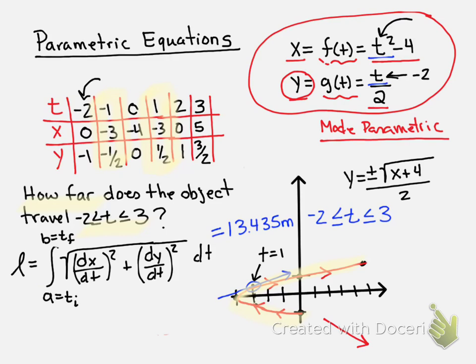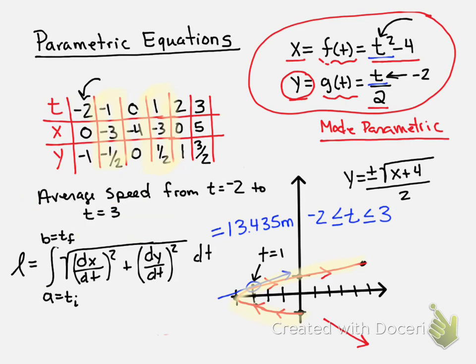A couple other things you might be asked are the average speed from t = -1 to t = 3. Well, if we already had a distance traveled, we could just divide this by the time, 3 minus a -2. We're really just dividing that distance by 5 seconds or 5 units of time. And as a formula, we're just going to add out on front here a 1/(B - A). And that will always give you your average speed.